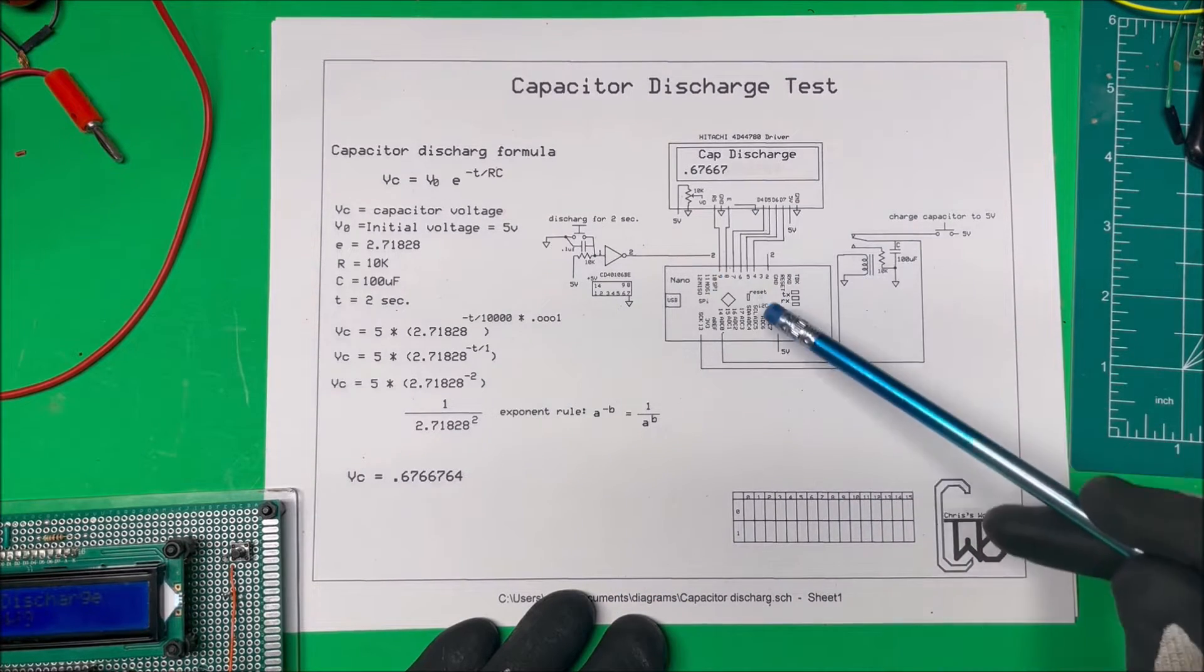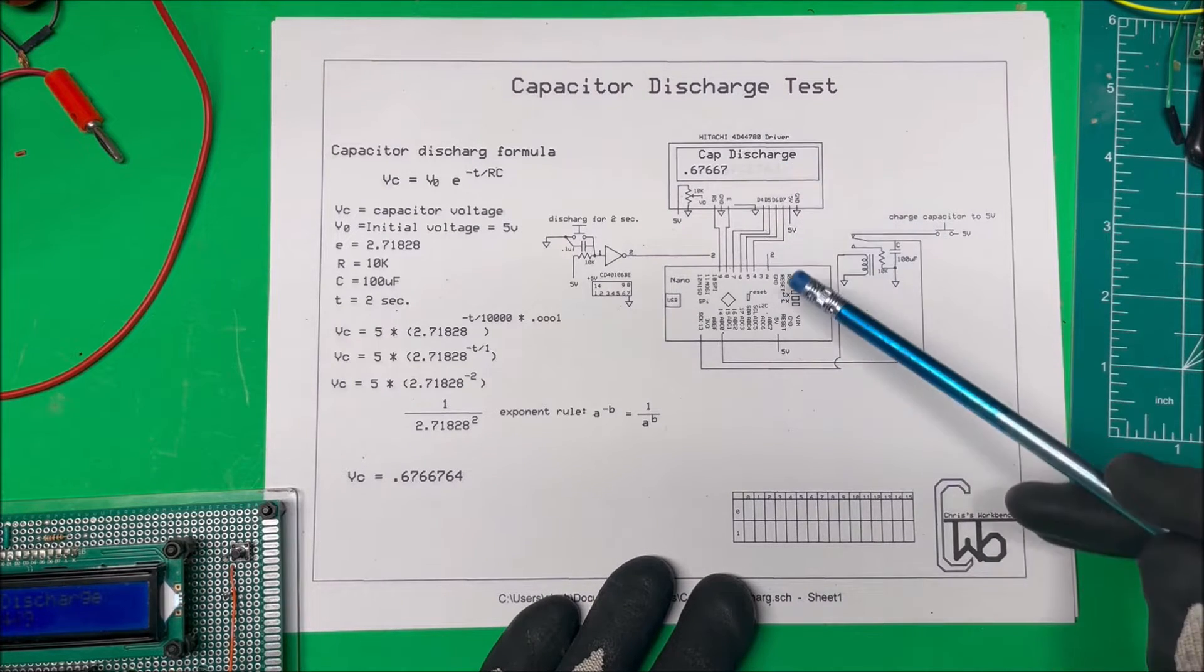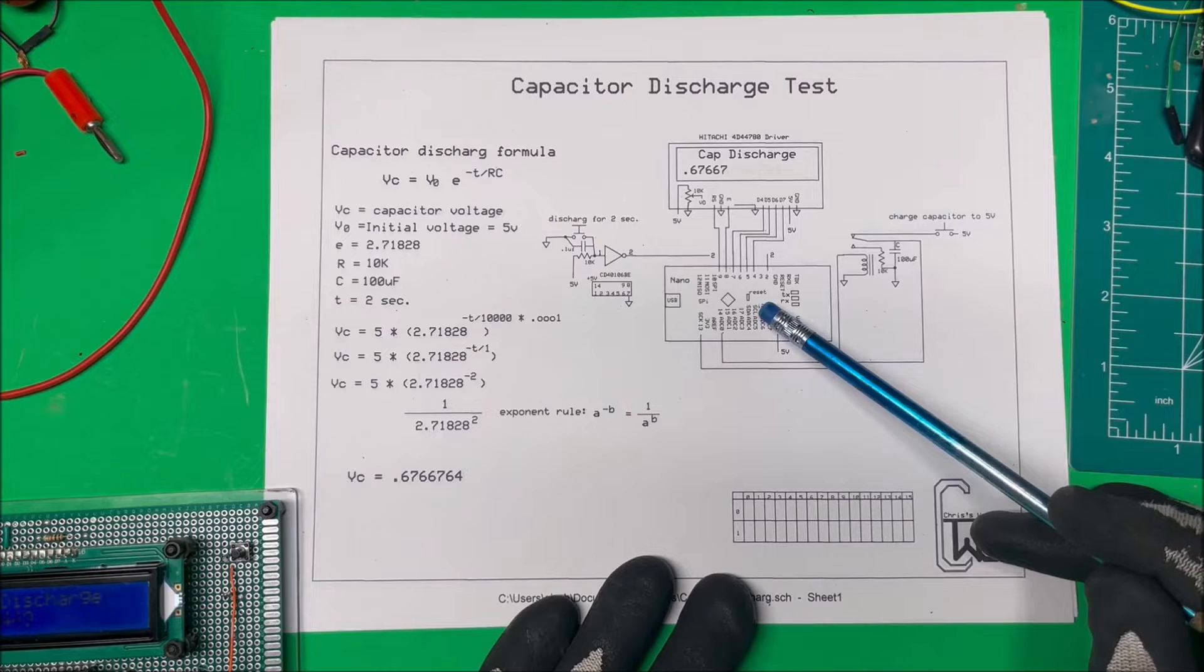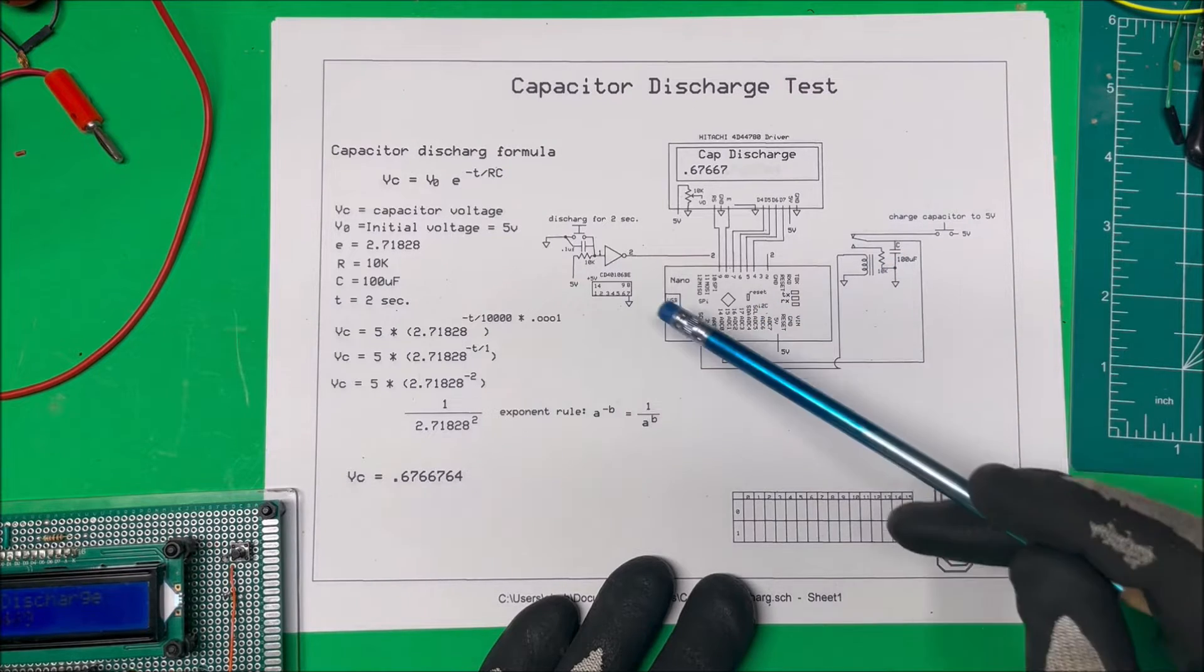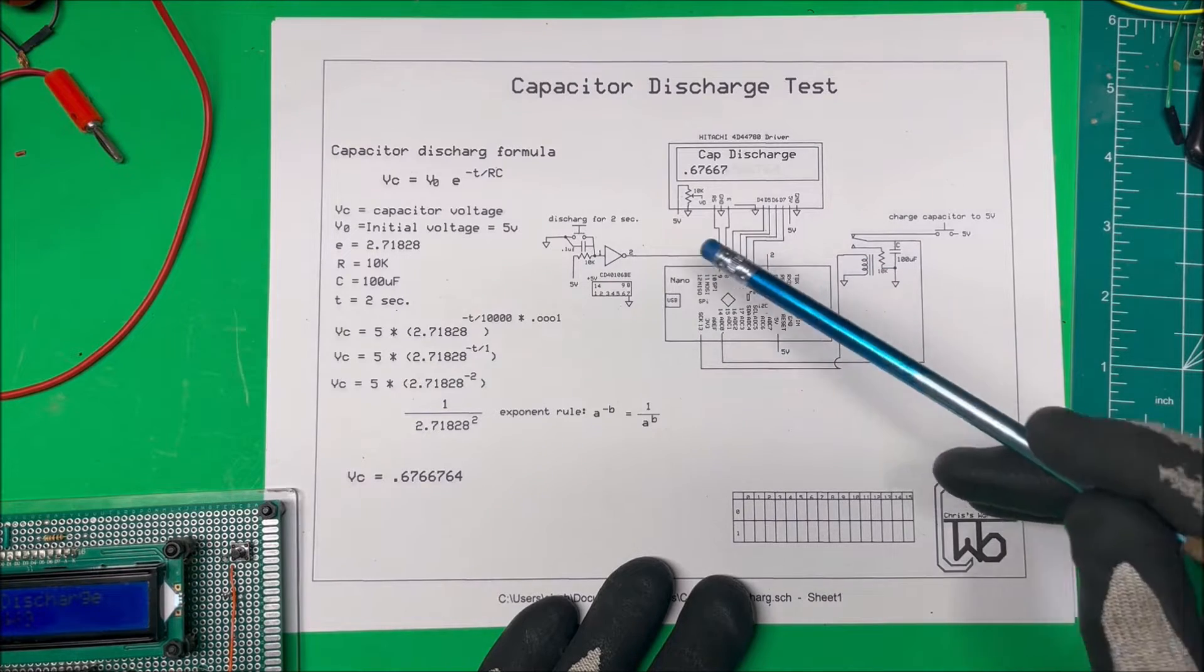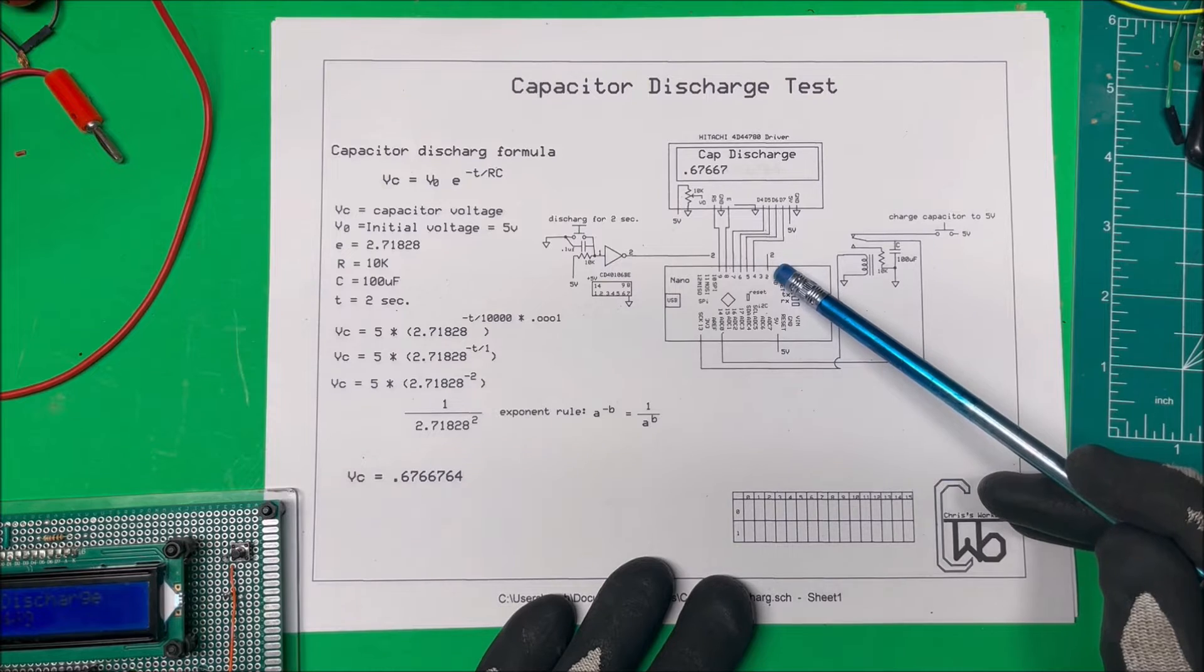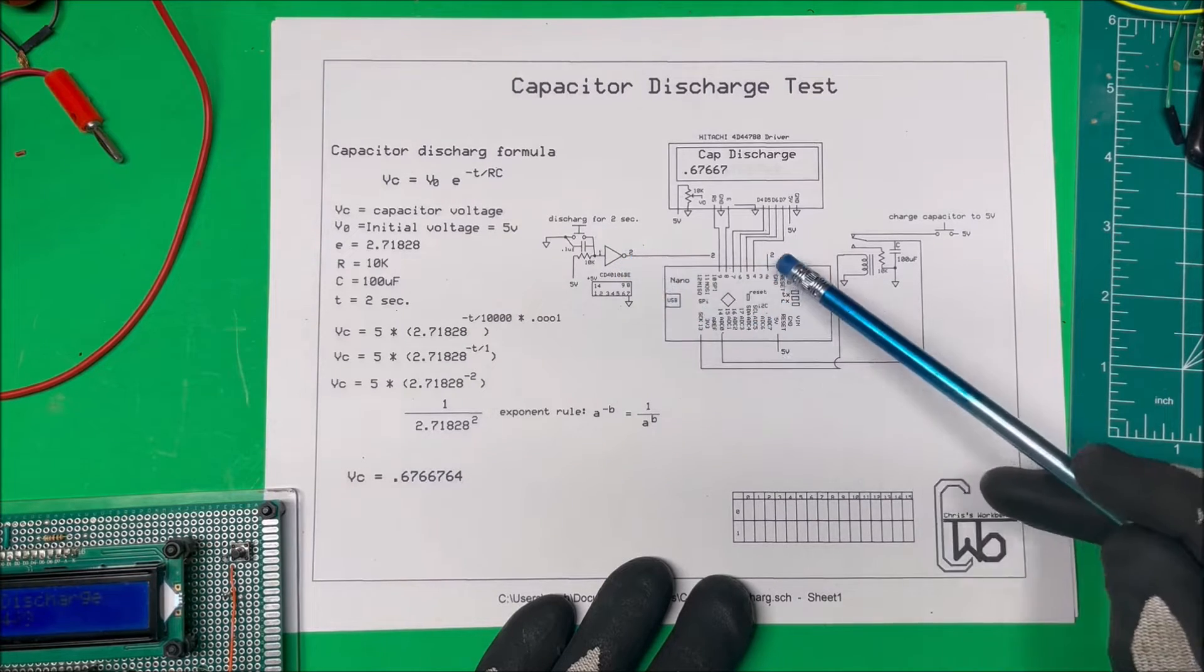So what I did is I built up this little circuit here. This is our LCD display, our Arduino Nano. I've got a relay over here and I have a Schmidt trigger to activate the relay. And I did use Schmidt trigger because I didn't want the input to bounce there at all. So that's all that's for.